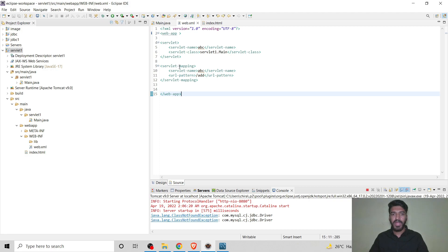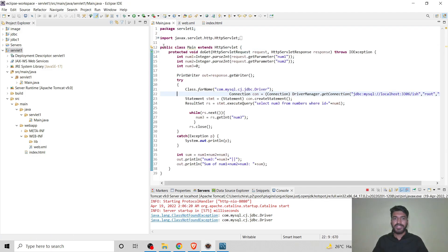This is the XML file in which the name of the servlet is abc and the URL pattern is add.